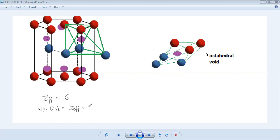We have already discussed the number of tetrahedral voids. Number of tetrahedral voids is actually double the Z effective, two into Z effective, that is twelve. So there are six octahedral voids found in an HCP unit cell.